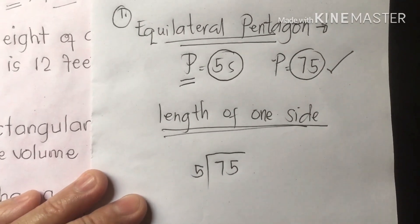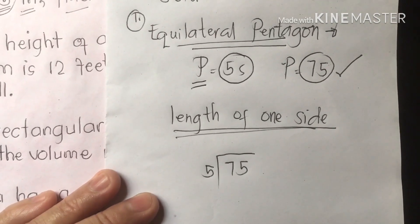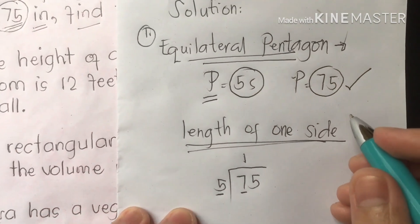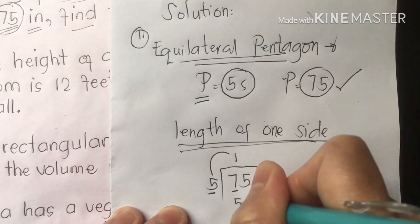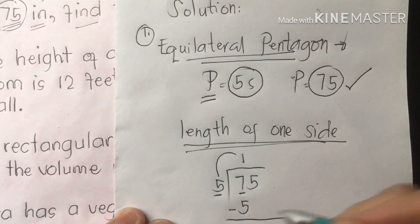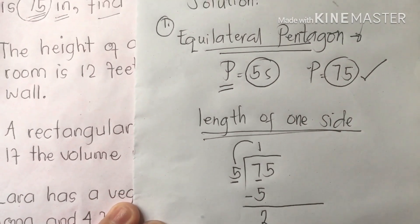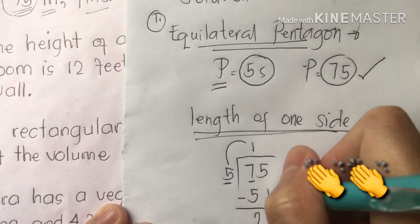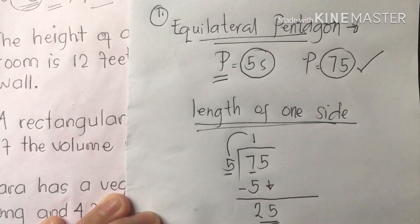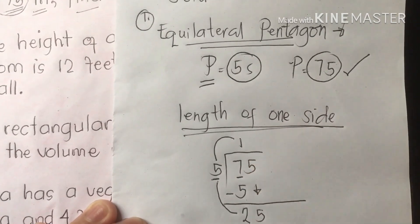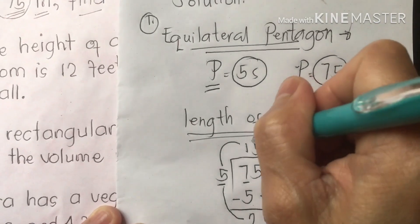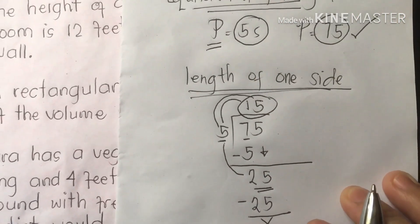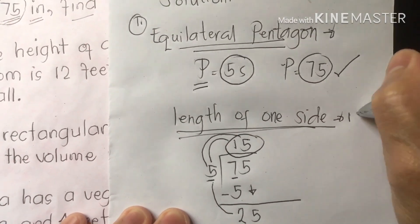We divide 75 by 5. First, 1 times 5 is 5; subtract 5 from 7, we get 2. We cannot divide 2 by 5 since 5 is greater than 2, so we bring down the 5 to make 25. Now 25 divided by 5 is 5. Check: 5 times 5 is 25. So the length of one side of the equilateral pentagon is 15.